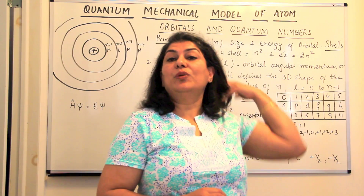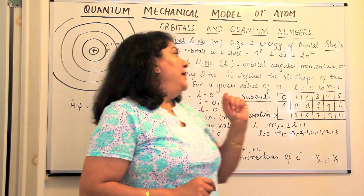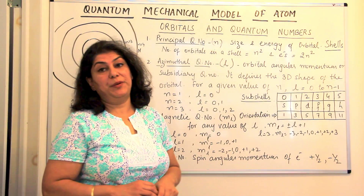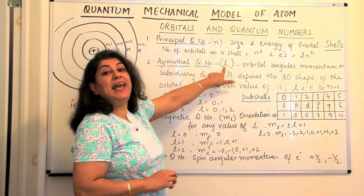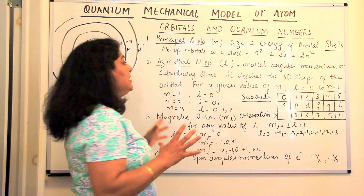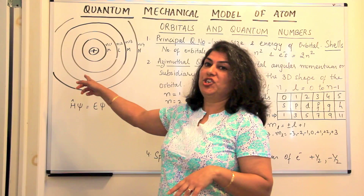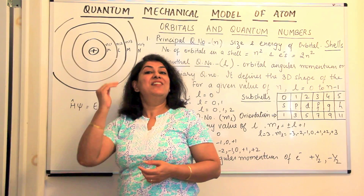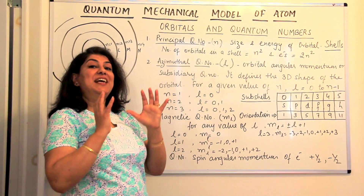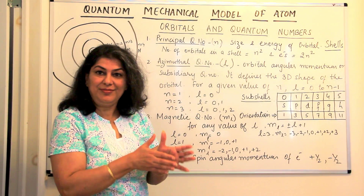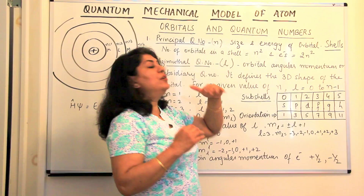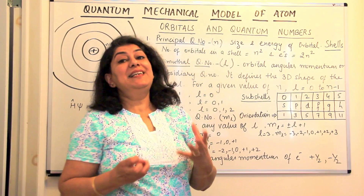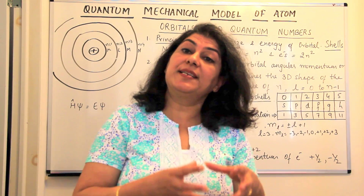That was the first quantum number — the principal quantum number. Now let us come to the next quantum number. The second quantum number is known as the azimuthal quantum number, represented by the letter L. It tells you about the angular momentum, but more importantly it tells you about the sub-shell. It is also known as the angular momentum quantum number or the subsidiary quantum number, and it gives you an idea about the sub-shells present in an atom.